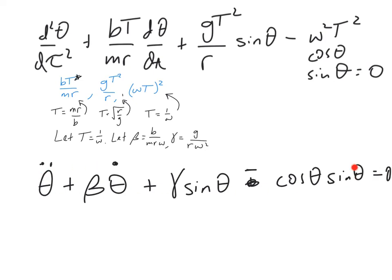This equation will have the exact same behavior as the fully dimensional equation that we started with. But now we can see what the natural parameters of this equation are. Before, if we adjusted m or if we adjusted b, it seemed like we were adjusting different things. But now we can see that what actually matters is the ratio of b over m.